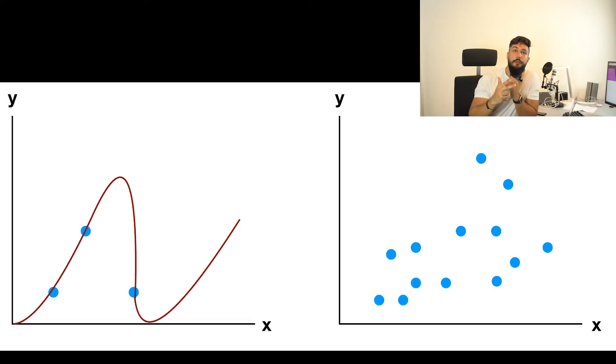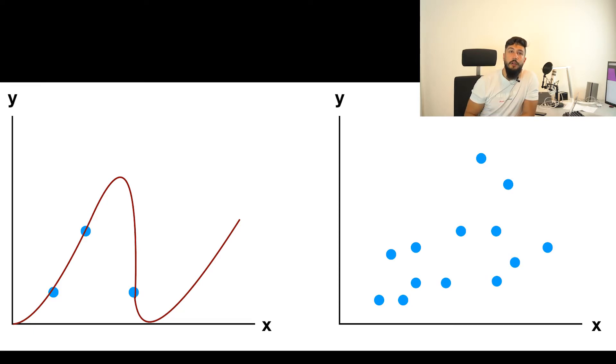Now that we've talked about what causes overfitting, let's talk about how to prevent it. The first general way is collecting more data. The more data you have, the harder it is to overfit your model. As an example, take a training dataset with three data points — it's fairly simple to draw a line to perfectly hit all of them. But imagine a training set with 10,000 data points; you would need a high polynomial function or a complex model to fit all of them perfectly.